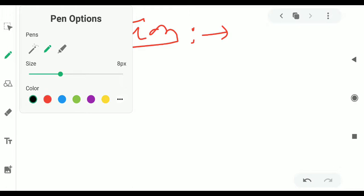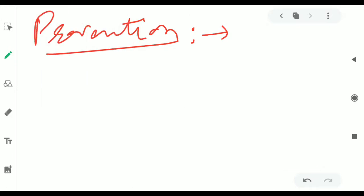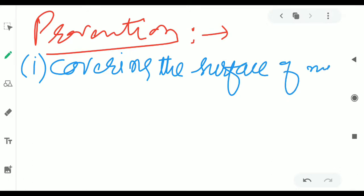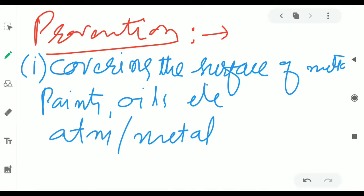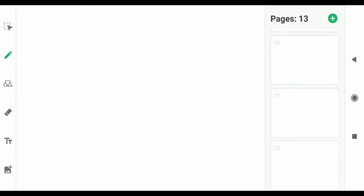Rusting of iron can be explained by the electrochemical theory. A simple theory in which some spots act as anode, some as cathode. Now we will see how to prevent corrosion. Point number one: By covering the surface of metal by substances like paints, oils etc. This paint forms a barrier between atmosphere and our metal. They don't come in contact with each other, so we can prevent corrosion or rusting.